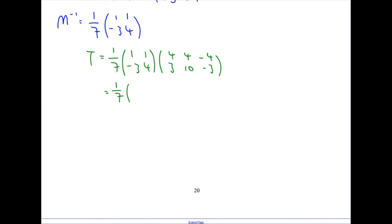I'm going to leave the 7th on the outside until the end. I'm hoping that all of my answers will be divisible by 7. So if I do 1, 1 times this first column, that's 1 times 4 plus 1 times 3, which is 7. Then 1, 1 times the second column, that's 1 times 4 plus 1 times 10, that's 14. And then 1, 1 times the third column, 1 times minus 4 plus 1 times minus 3 gives you minus 7. On to the bottom row, so bottom row times the first column gives you minus 12 plus 12, they cancel to give you 0.